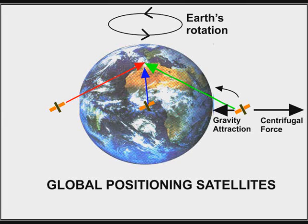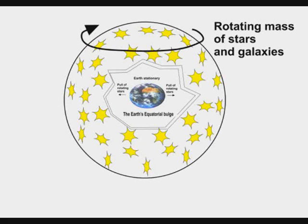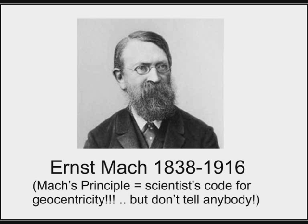How does the geocentric model explain these stationary satellites? There is a factor that is virtually ignored by astronomers, because it can be shown to support geocentrism. This factor is that, although they are far away, the huge mass of each star, and their trillions of numbers, have a major effect upon the Earth. This was first pointed out by Ernst Mach, and is known as Mach's Principle. Indeed, scientists use the word Mach's Principle as a code for geocentrism.